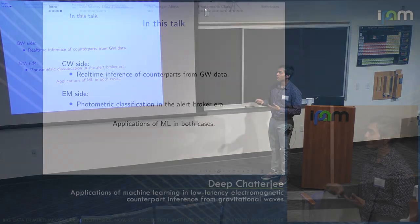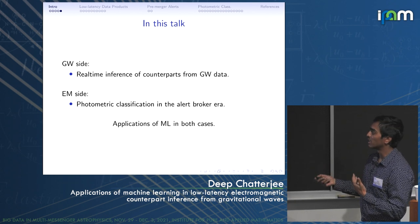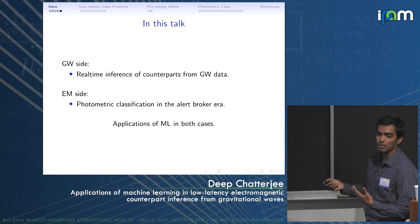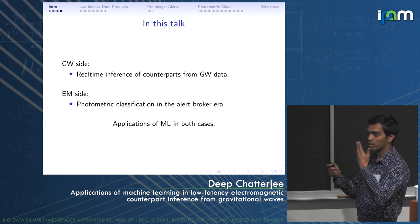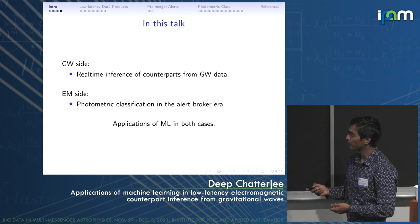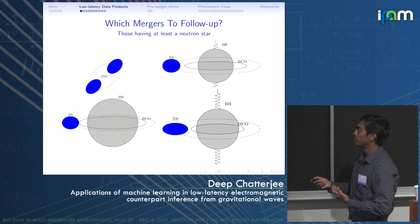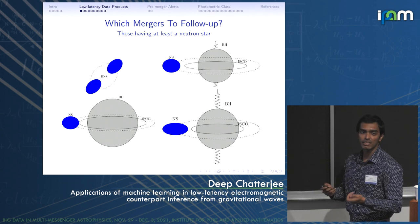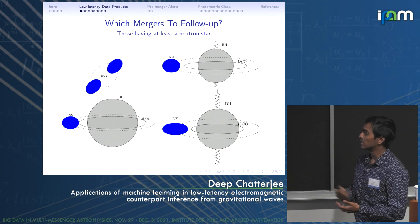What I'll be talking about in the next few slides is some of the applications of machine learning from the gravitational wave side — predicting counterparts — as well as on the EM side, which is photometric classification: if you have several candidates that you detect, how do you cut the candidate list down? The first question is: what mergers do we follow up? The first-cut answer is those that have at least a neutron star in the system, because you need matter in the system to generate these counterparts.